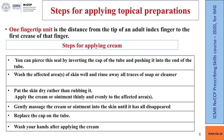One finger unit is the distance from the tip of the adult index finger to the first crease of that finger. When using an ointment tube, pierce the seal by inverting the cap and pushing it into the end of the tube. Wash the affected area of skin well and rinse away all traces of soap or cleanser. Pat the skin dry and apply the cream or ointment thinly and evenly, then gently massage it into the skin until it has all disappeared.